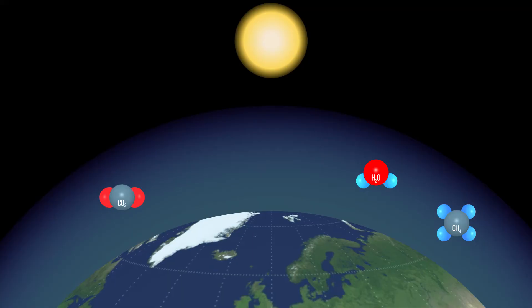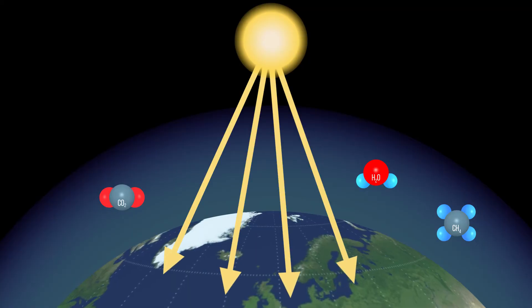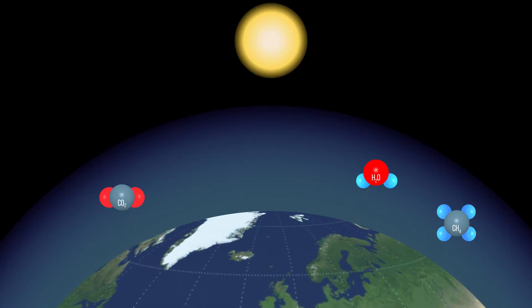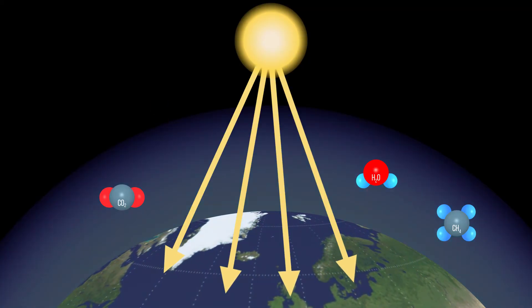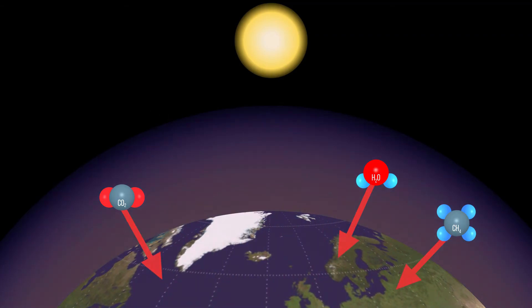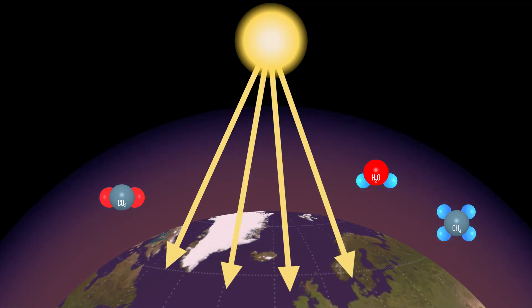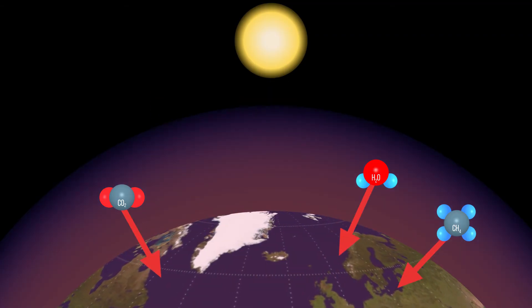The sun is the external heat source for the earth. If the earth didn't have an atmosphere with naturally occurring greenhouse gases it would be much colder than it is now. In fact it would be nearly minus 18 degrees centigrade, 33 degrees colder than the average temperature of the earth today. Greenhouse gases exist naturally in the air and absorb the infrared or heat energy coming up from the earth in a process known as the greenhouse effect, re-emitting it down towards the earth's surface.